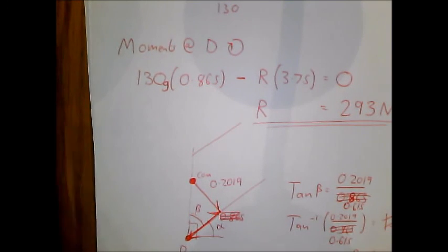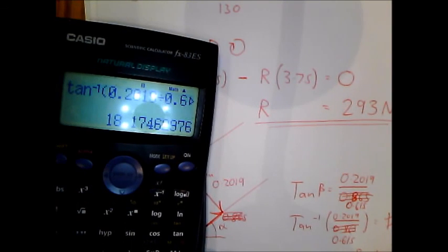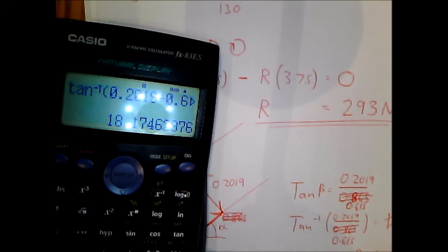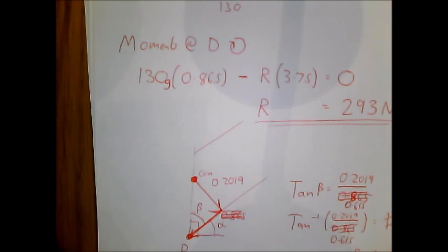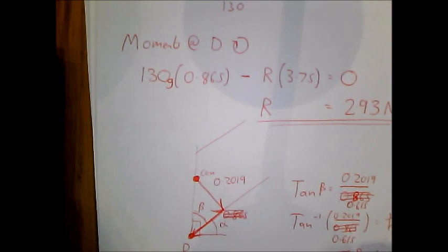So that's going to slightly adjust this. Inverse tan 0.2019 divided by 0.615. So that should now be 18.1746. So I take 90 off this. And this gives us 71.80. Well, that's it.